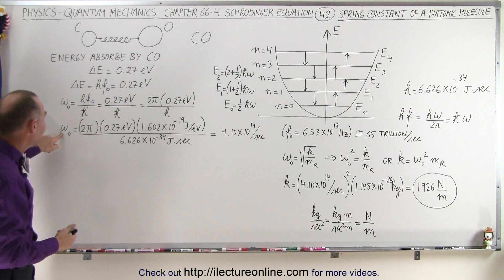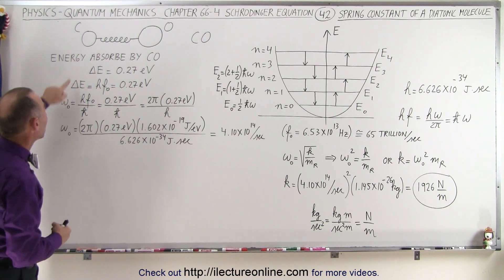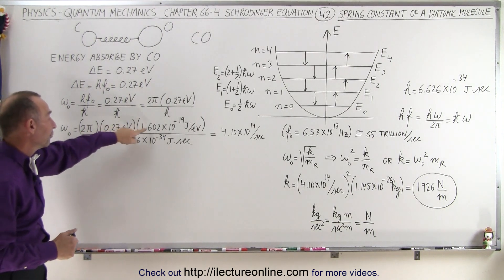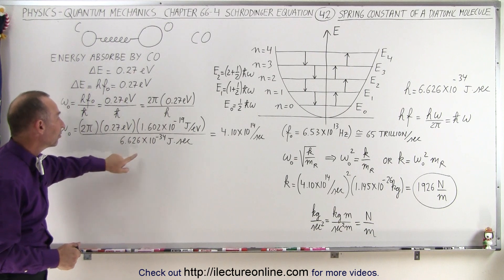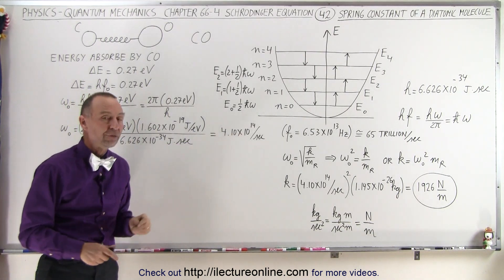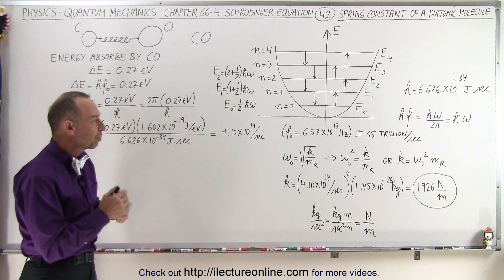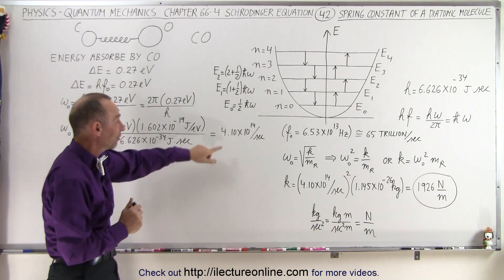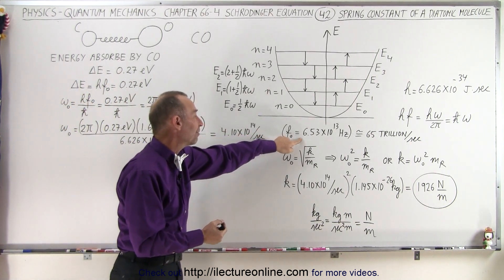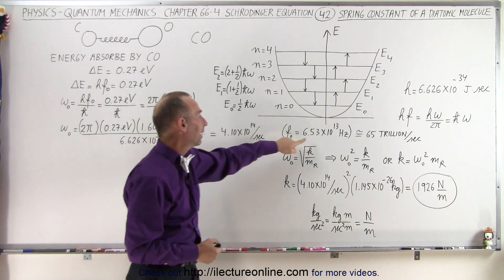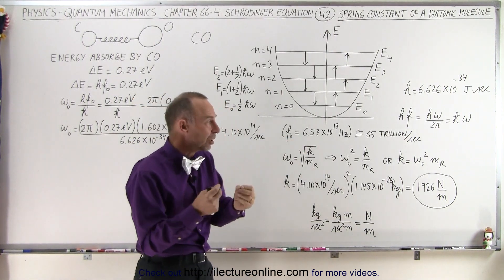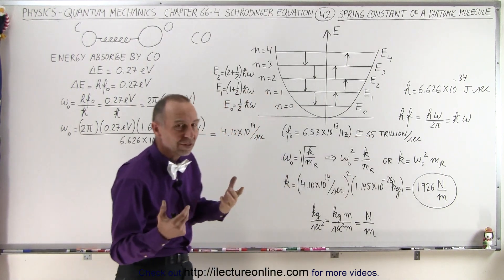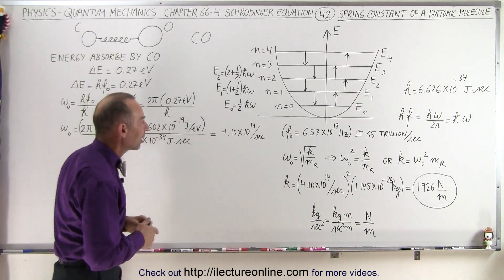Working this out, the angular frequency of a carbon monoxide molecule equals 2 pi times the energy in electron volts converted to joules, divided by Planck's constant, giving us 4.1 times 10 to the 14th radians per second. The actual oscillations per second — found by dividing by 2 pi — shows that a carbon monoxide molecule vibrates at a rate of 65 trillion vibrations per second. That's the base vibration of a carbon monoxide molecule.